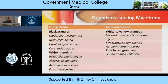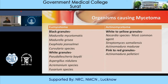These are the organisms responsible for Eumycetoma and Actinomycetoma. Eumycetoma is caused by fungi and presents with two types of granules: black granules and white granules. Black granules are seen with Madurella mycetomatis, Madurella grisea, Exophiala jeanselmei, and Kerbularia species. White granules are seen with Pseudallescheria boydii, Aspergillus nidulans, Acremonium species, and Fusarium species.